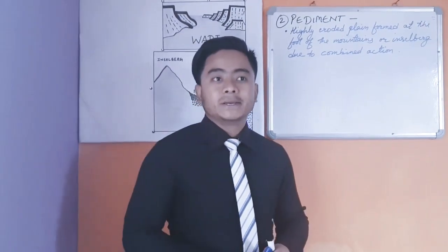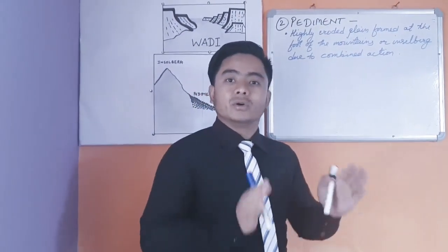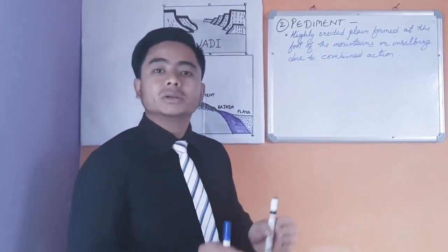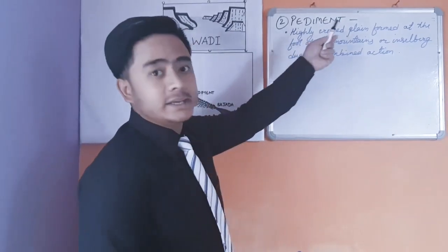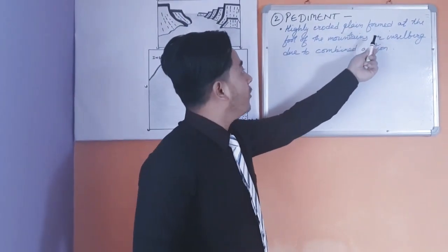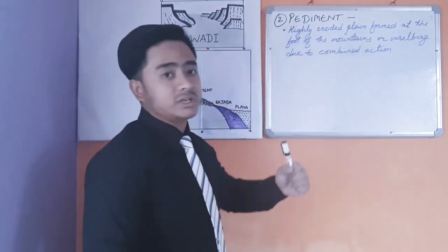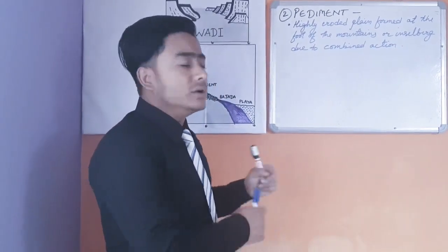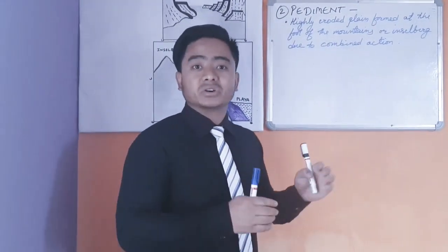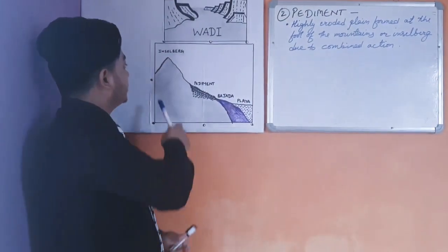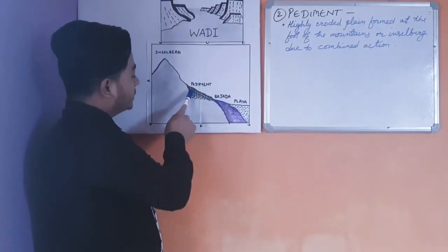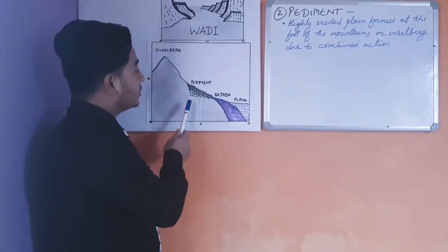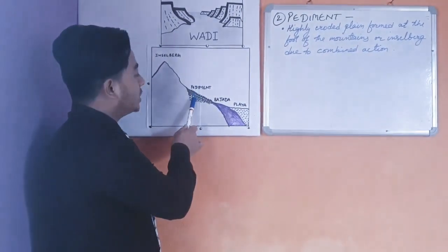The second landform formed by the combined action of wind and running water is pediment. Pediment is a highly eroded plain formed at the foot of a mountain or inselberg due to the combined action of wind and running water. As shown in the diagram, this particular landform is called pediment.